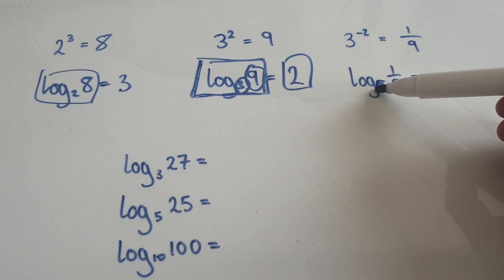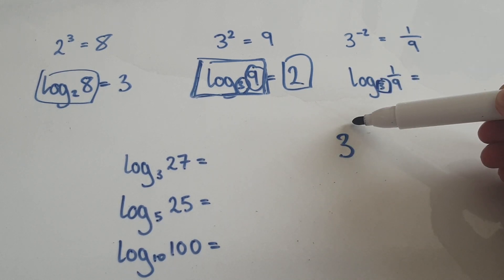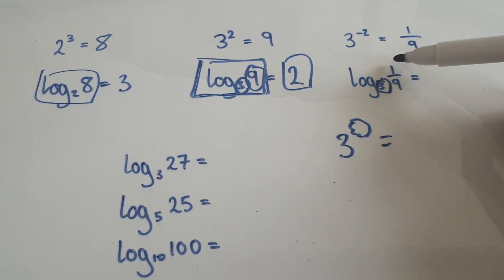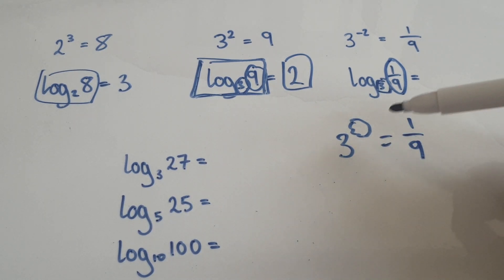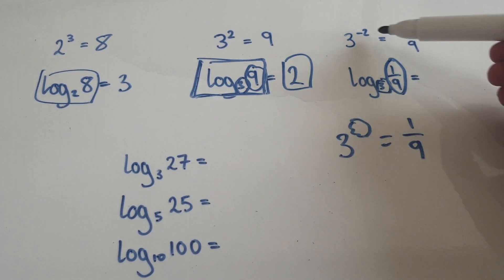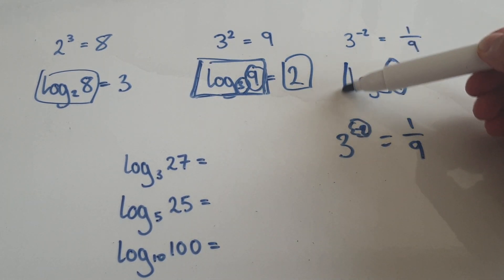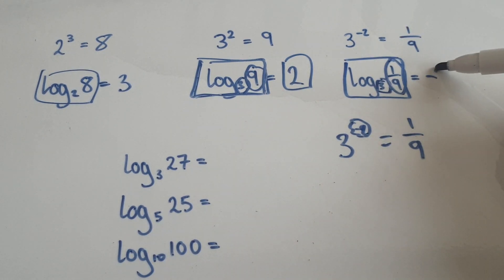You're right to zoom into the base. 3 to the power of what would give me this thing here? It turns out to be negative 2. So this whole block here equals negative 2.